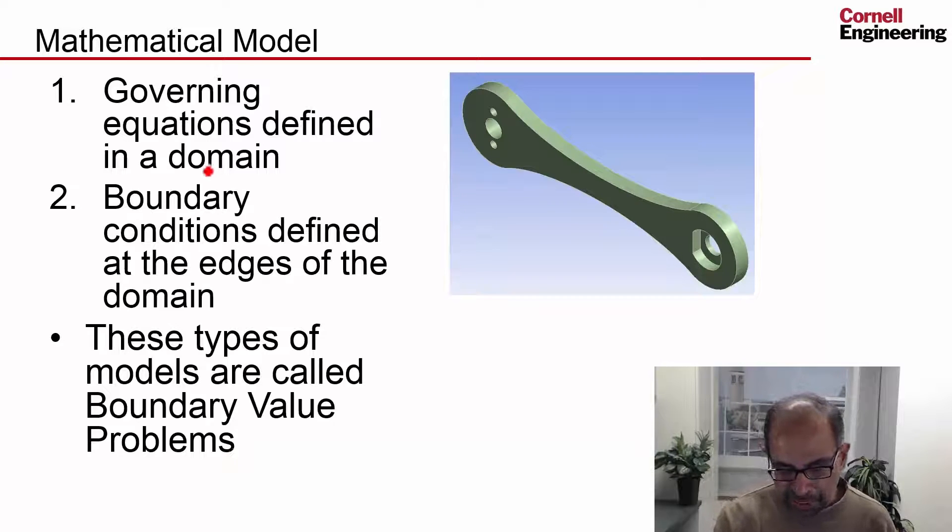In this case, the domain over which we need to solve the governing equations are given by the geometry of the crank. Compare that to the domain that we had in the big ideas in FEA. Over there, our domain was a line from X equal to 0 to X equal to L. It's the same idea. So you can see we have really ramped up the complexity of the domain and we have gone from 1D to 3D. We can do that because we have ANSYS at our disposal and it can solve boundary value problems that are defined in complex domains.